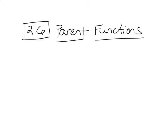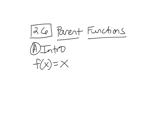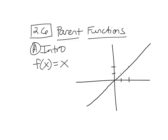Here are our two basic parent functions — this is our little introduction. So f of x is equal to x. That is the most simple line you could ever imagine. Slope is 1. Y-intercept is 0. And that is a parent function. You have to know this graph off the top of your head. If you plug in 1 for x, you get 1 for y. Plug in 2 for x, you get 2 for y. You get a basic diagonal line that goes through your graph.